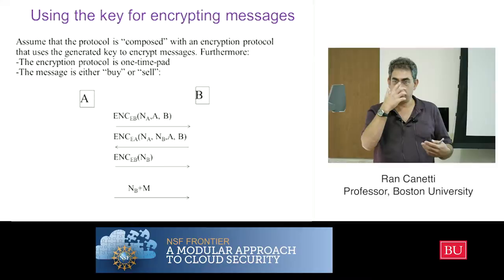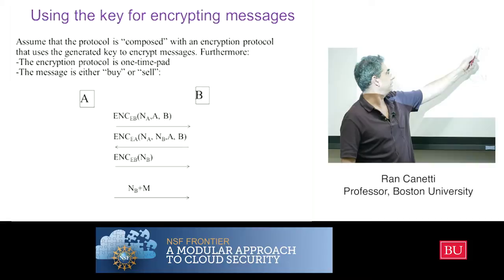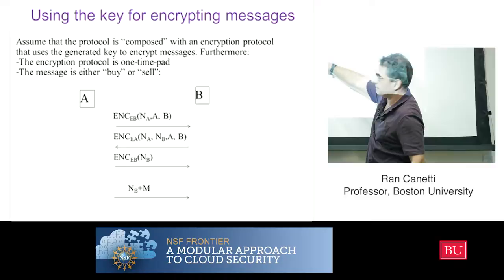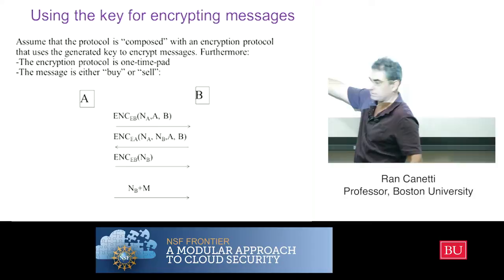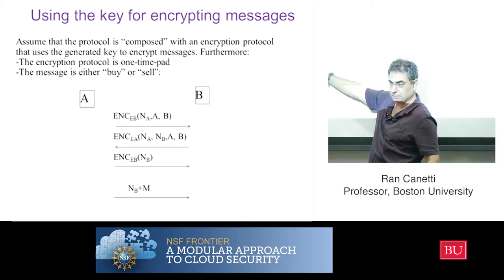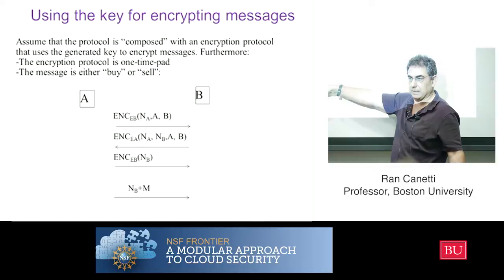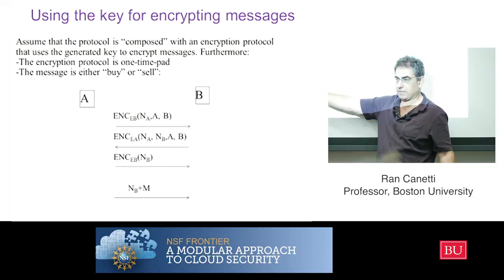The key is NB. This party knows NB at this point but only uses it after receiving the last message, because before that the protocol isn't done. This other party knows the key at this point and starts using it here — that's the end of the key exchange protocol for them. Now let's use this key to encrypt with a very simple scheme: one-time pad — just XOR the message with the key, once. That's it.